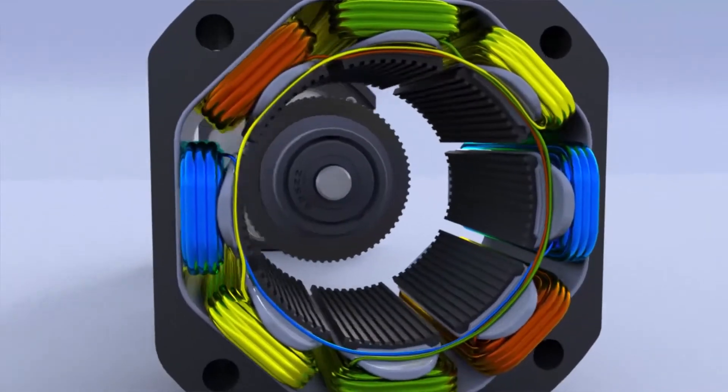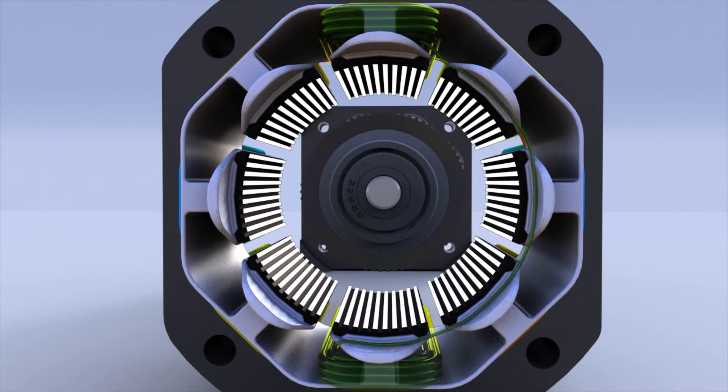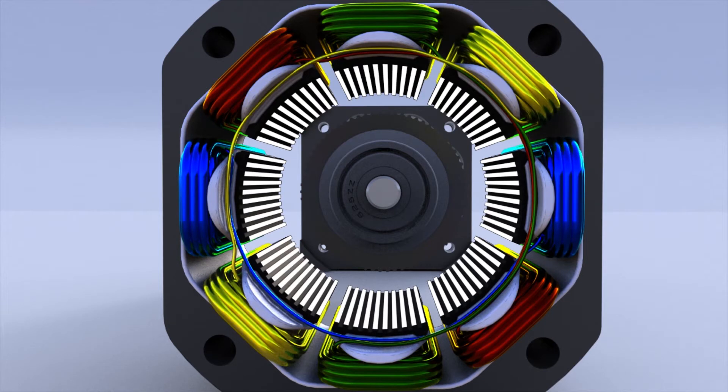Stator has magnetic poles with small teeth. Each pole has a winding. Each winding is connected to the winding of the opposite pole so that both poles are magnetized in the same polarity when current is sent through the pair of windings. Pair of windings are shown in same color.